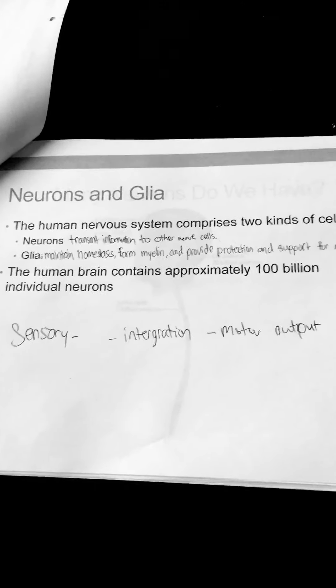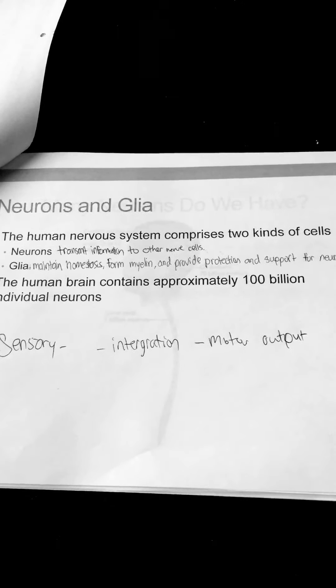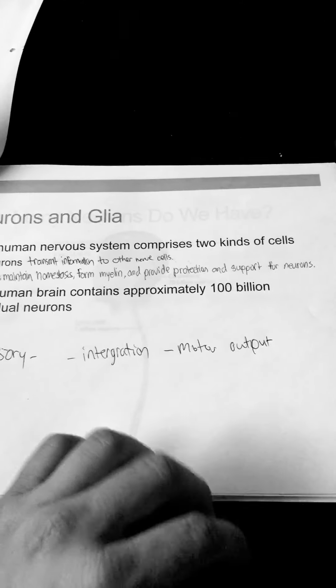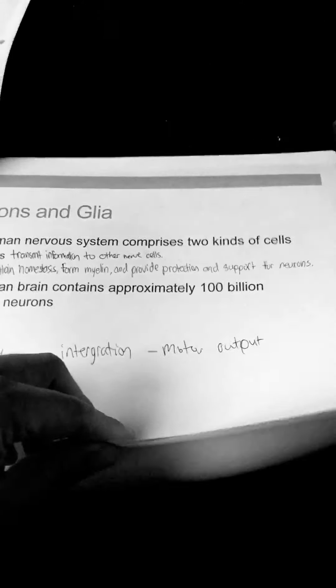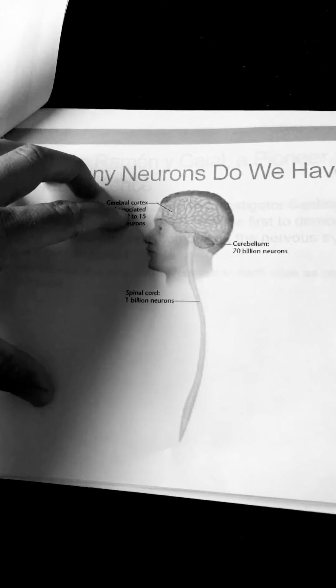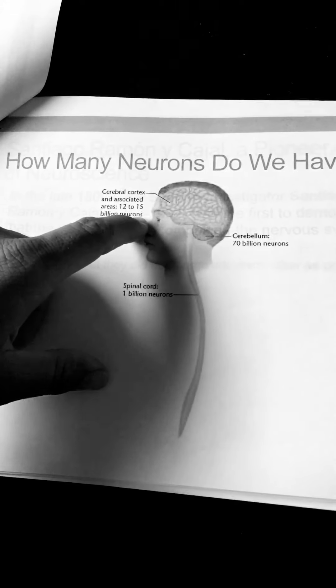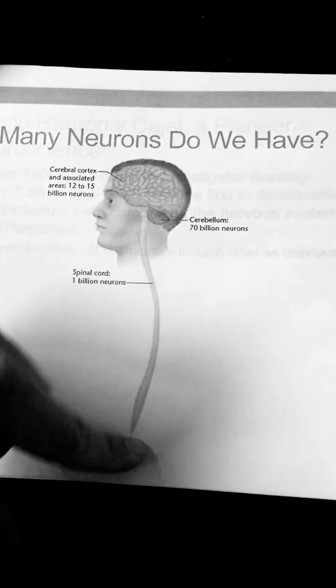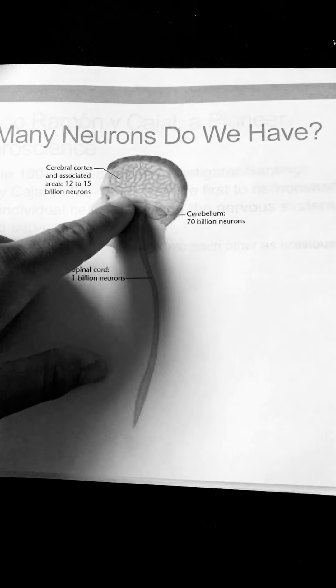The human brain contains approximately 100 billion individual neurons. The cerebral cortex has 12 to 15 billion neurons — a good chunk of the brain itself. The cerebellum has 70 billion neurons. And the spinal cord, which goes all the way down through the brainstem.